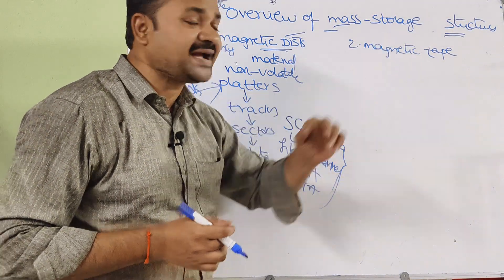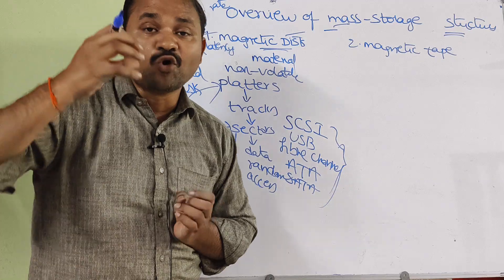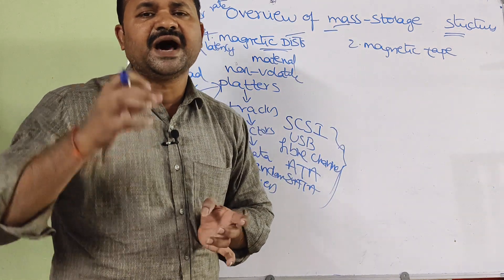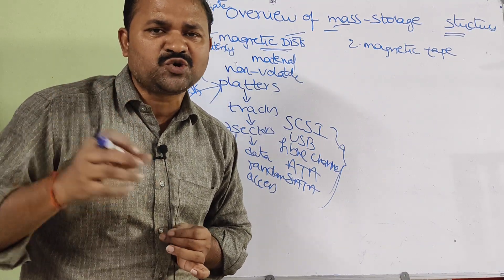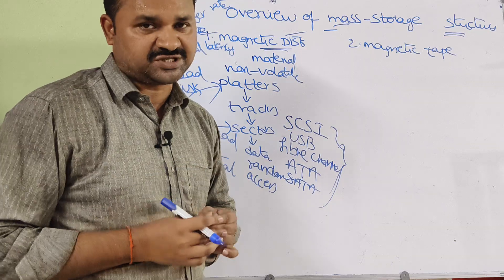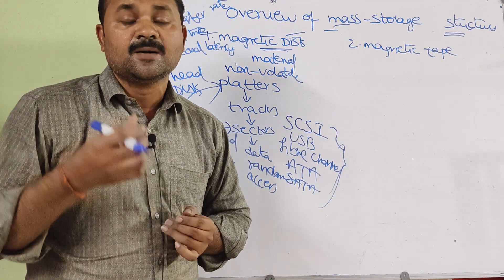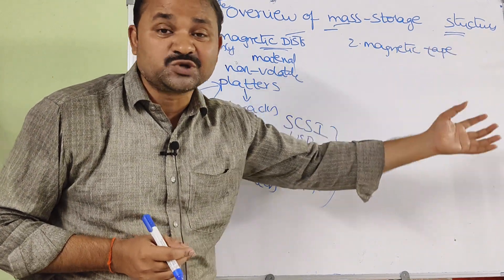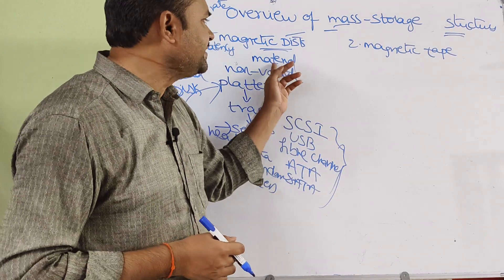Now let us discuss magnetic tape. Nowadays we use magnetic disk only, but in older days we used magnetic tape. Magnetic tape is also useful for storing data permanently in the computer, which means it is also a non-volatile memory. When the power is turned off, the contents of the magnetic tape won't be lost. Magnetic tape is also used for storing large amounts of data and is also a secondary storage device, just like a magnetic disk.